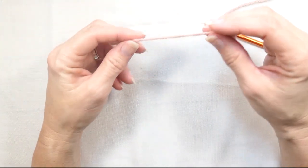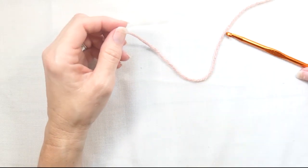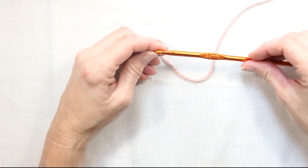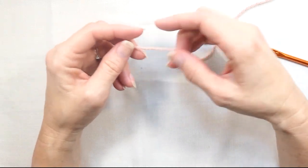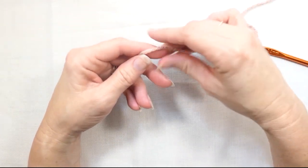So I just have some yarn here. This is just a worsted weight 4 yarn. And I have my 5.5mm hook. It's a pretty big hook size for this yarn, but I think it will be good to show you how to do this.